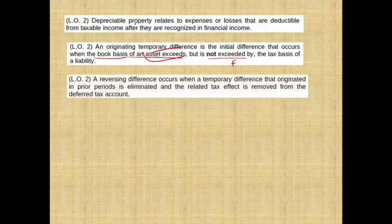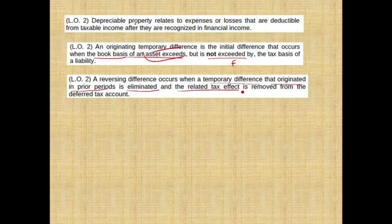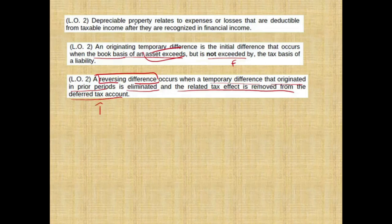A reversing difference occurs when a temporary difference that originated in a prior period is eliminated and the related tax effect is removed from the deferred tax account. Is this the definition of a reversing difference? Yes, that's exactly what happens. A reversing difference eventually reverses and it gets eliminated from the deferred tax account. If you had a deferred tax asset, you would remove the deferred tax asset; if you had a deferred tax liability, you would remove it. So this statement is true.